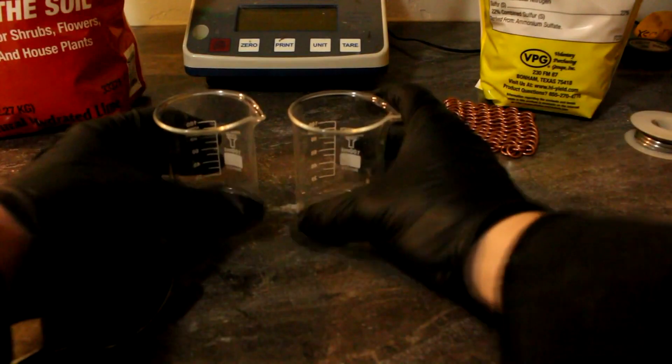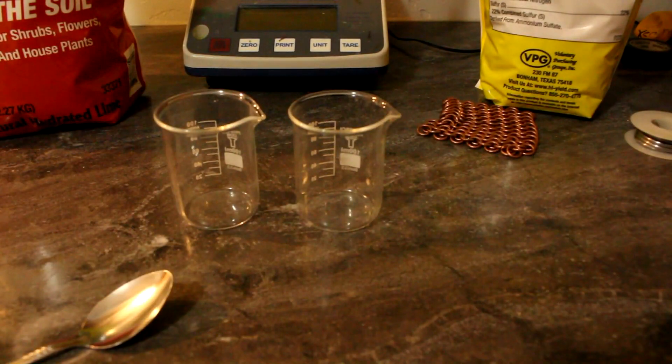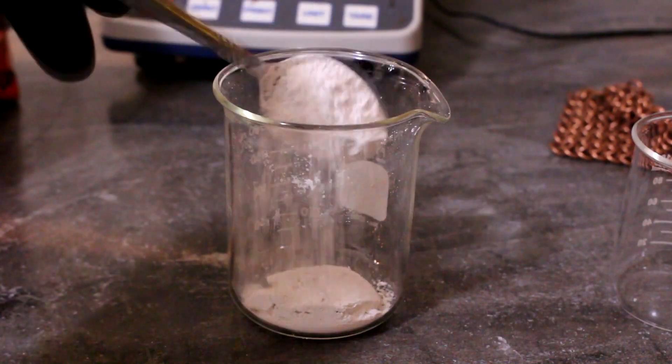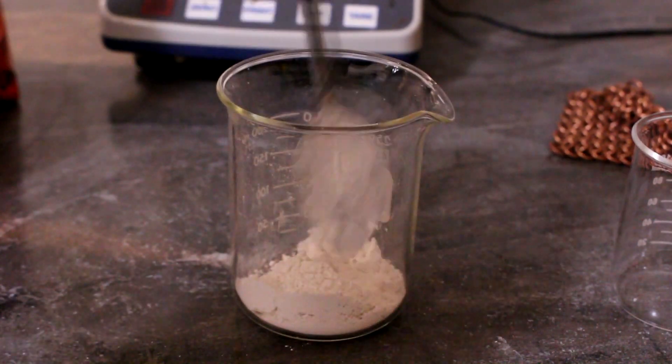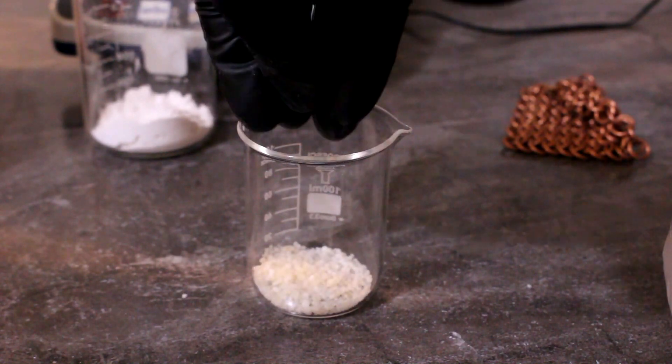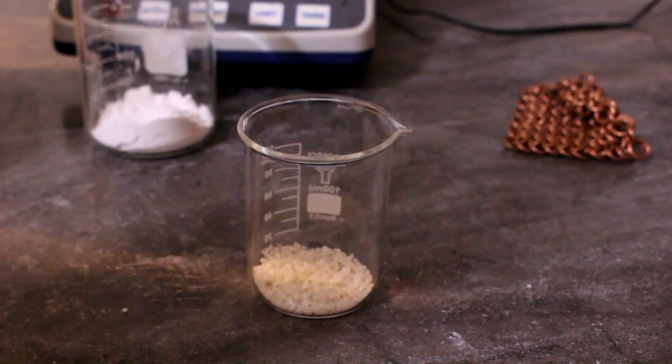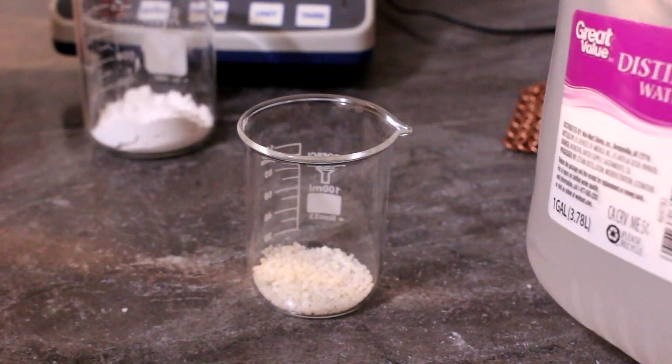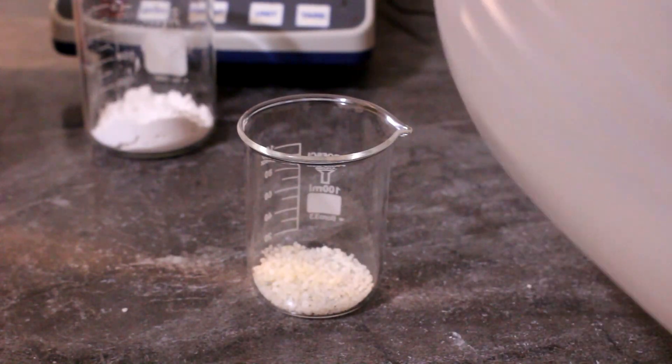So without further ado, let's mix up an ammonium hydroxide solution. First let's add a few heaping tablespoons of slacked lime to this beaker here. Next I'm going to add some ammonium sulfate to this other smaller beaker and I'm going to add enough water to completely dissolve it.